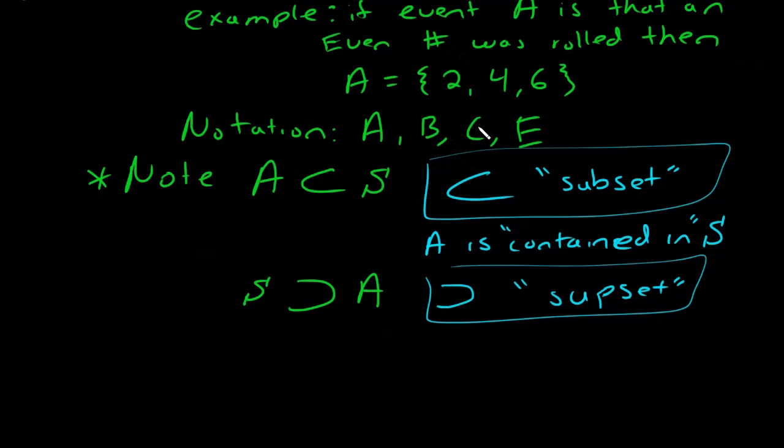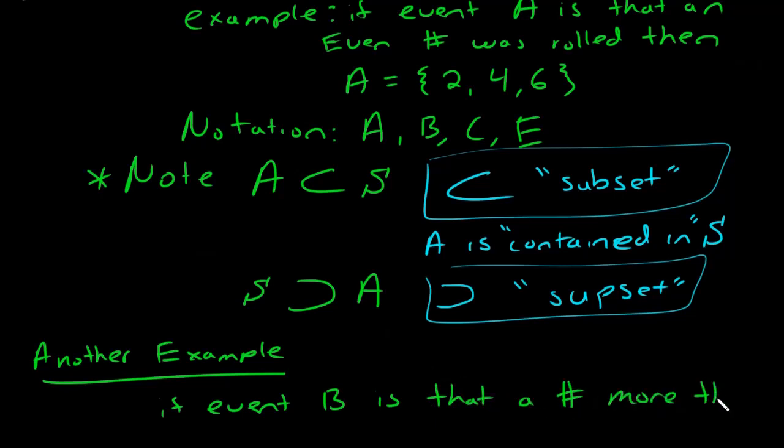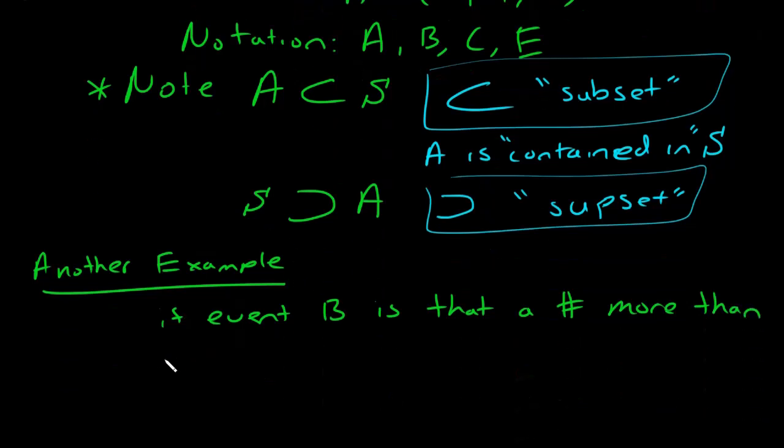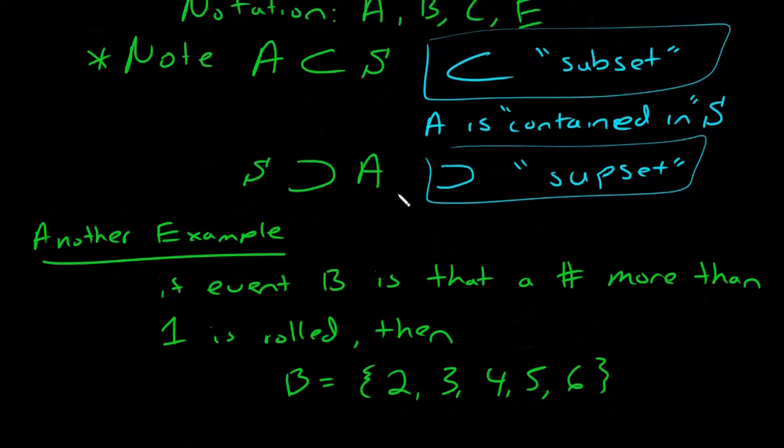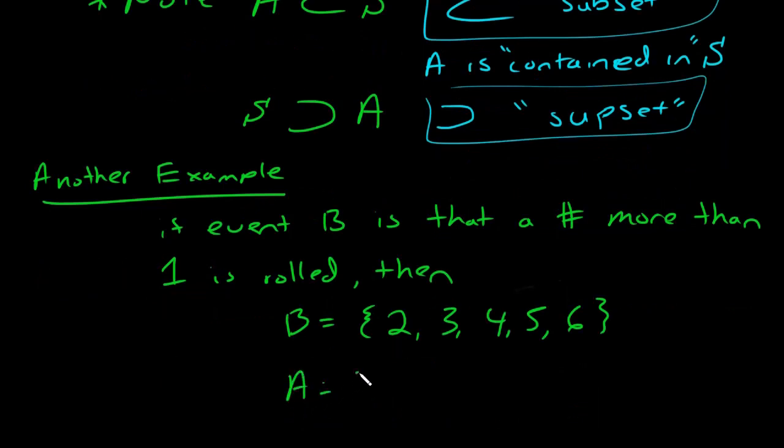Let's go ahead and do another example with subsets, because actually this is an important thing that we need to be thinking about. So if event B is that a number more than 1 is rolled, then what's B? If it's more than 1, then you could roll a 2, a 3, a 4, a 5, or a 6. And so let's think about, remember we also have A, A is an even number. So that's a 2, a 4, and a 6.